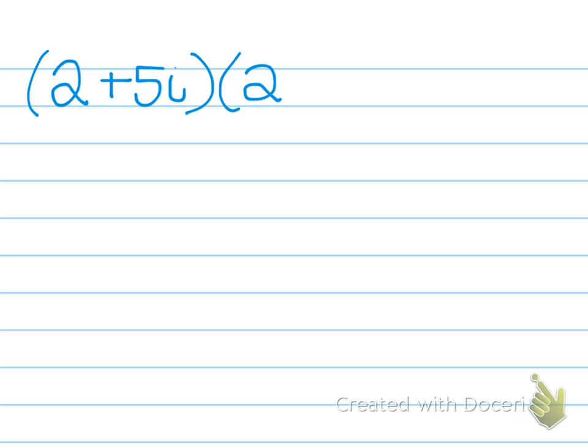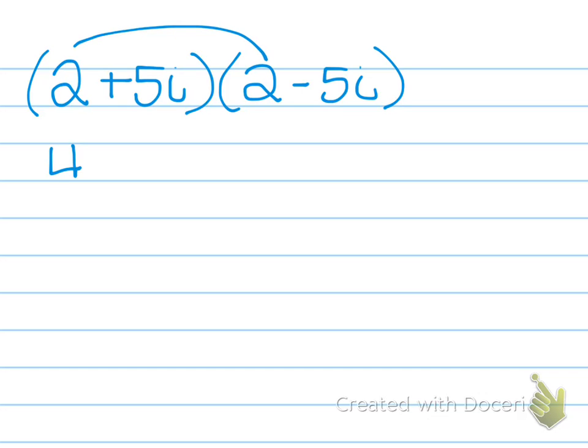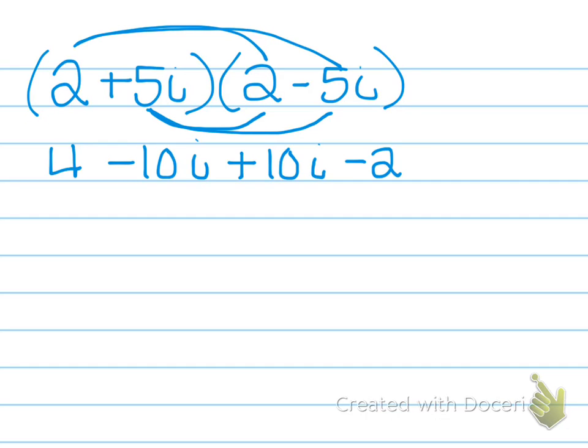The importance or the purpose of the conjugate is that when we multiply them together, we're going to get rid of the imaginary part. For example, if I gave you 2 plus 5i times the conjugate 2 minus 5i, when I distribute, I'm going to get 4 minus 10i plus 10i and then minus 25i squared. You can already see that the middle two terms are going to cancel out.